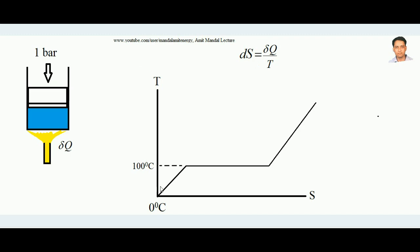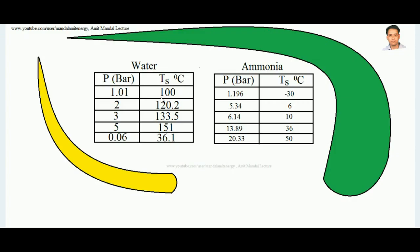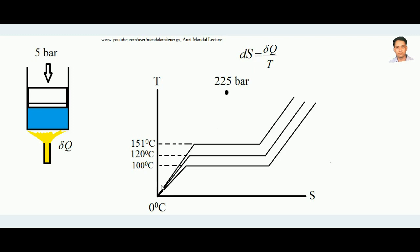Now if the pressure in the piston-cylinder system is 2 bar, with the same initial temperature of 0°C, the process repeats but reaches the boiling point of approximately 120°C. Both entropy and temperature increase up to 120°C, then phase change occurs at constant temperature, and then vapor temperature rises further. Similarly at 5 bar, the water reaches its boiling point of 151°C, then undergoes phase change, then temperature rise of vapor.